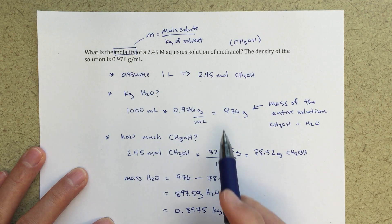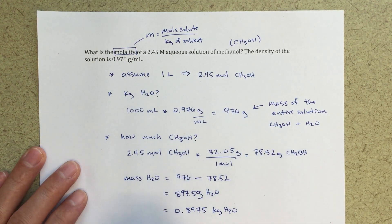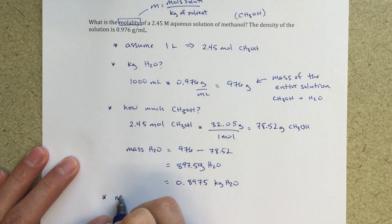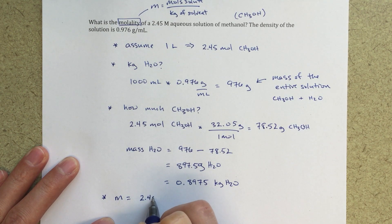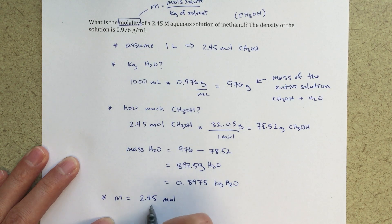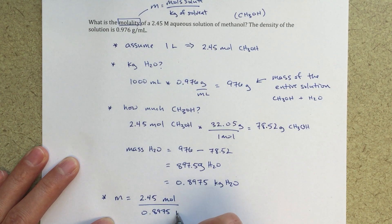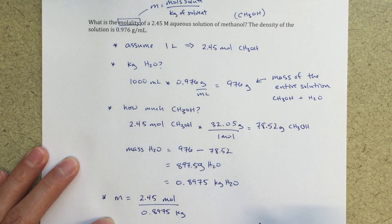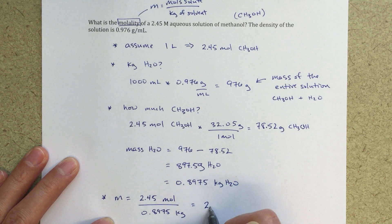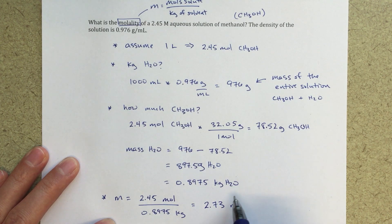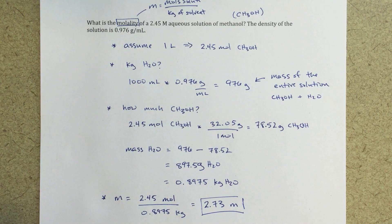And so that's what I'm going to use as my denominator. So then finally, if I wanted to solve for my molality, that's going to equal 2.45 moles, moles of solute, over 0.8975 kilograms - make sure that we're converting to kilograms - equals 2.73 molal. So molal is how we would say that, 2.73 molal in CH3OH.